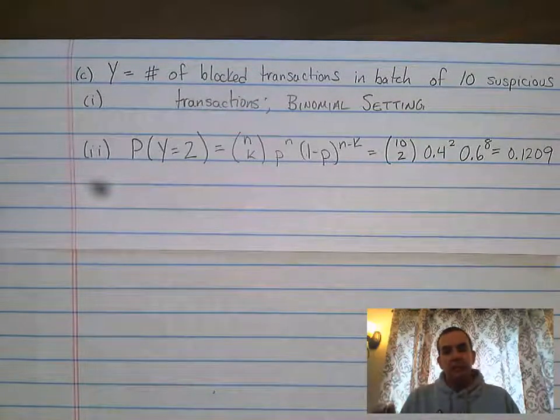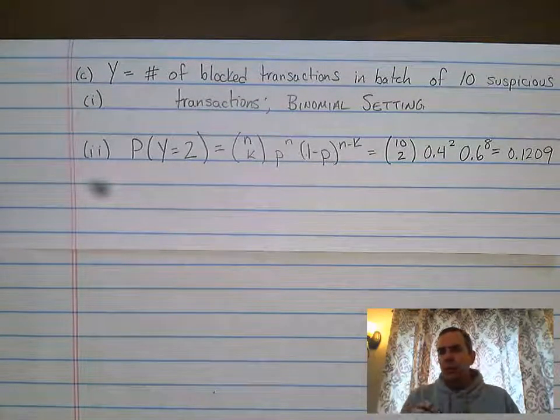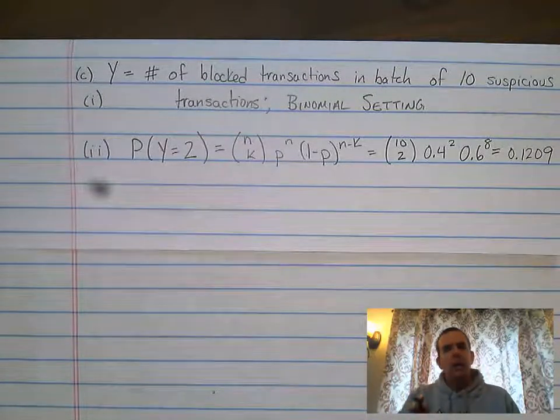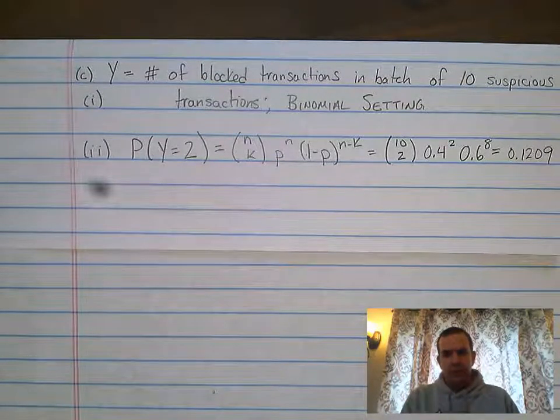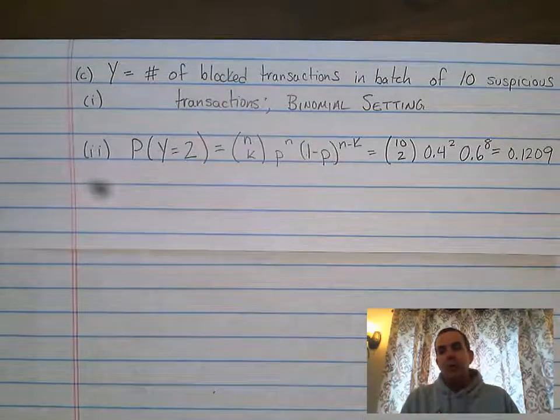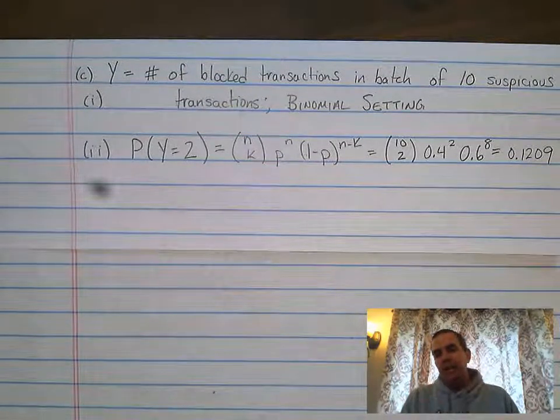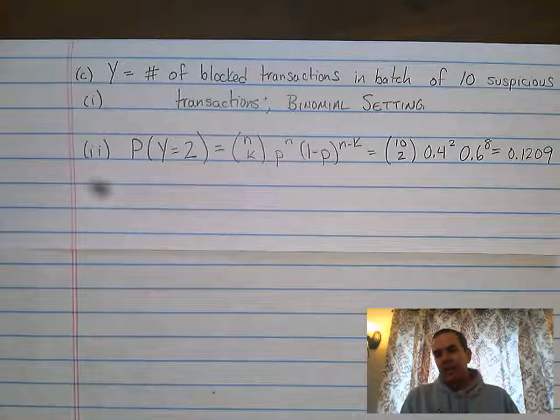So this is a binomial setting, and it's going to go into that world where we do binomial PDF, binomial CDF. Reminder, binomial PDF is an exact number. Binomial CDF is a range below. So it's that number and below. In this case, it's an exact number.